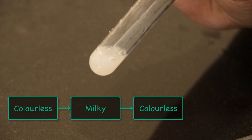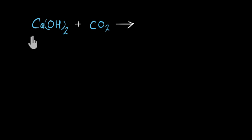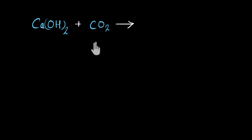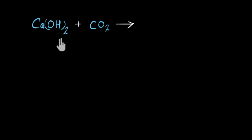You might be wondering what's happening here. Let's look at the chemical reactions. Lime water is a dilute solution of calcium hydroxide in water, and the carbon dioxide will react with calcium hydroxide. We have talked about this in the video on combination reactions — calcium hydroxide is used to whitewash our houses; we apply it on walls and after two or three days the walls become shiny, because calcium hydroxide reacts with the carbon dioxide in the air and forms calcium carbonate, which is a shiny compound.